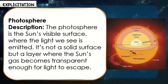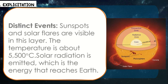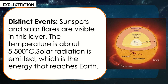The photosphere is the sun's visible surface where the light we see is emitted. It's not a solid surface, but a layer where the sun's gas becomes transparent enough for light to escape. Sunspots and solar flares are visible in this layer. The temperature is about 5,500 degrees Celsius. Solar radiation is emitted here — the energy that reaches Earth.